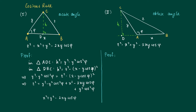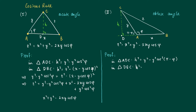Now the obtuse angle case. There's not a lot different, but the orthogonal projection CD is now outside the triangle. Look at triangle ADC. We get Y squared equals AD squared plus H squared, so H squared equals Y squared minus Y squared cosine squared(phi minus phi). In triangle DBC, H squared equals Z squared minus (X plus Y cosine(phi minus phi)) squared, where this part is Y times cosine(phi minus phi) and this part is X.